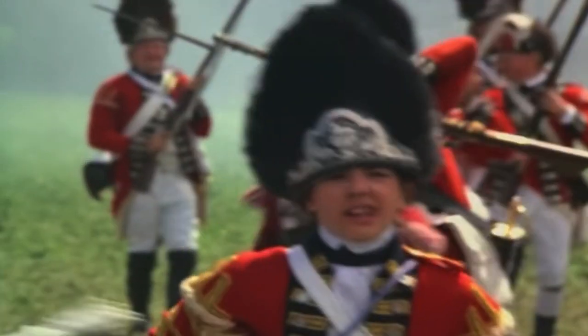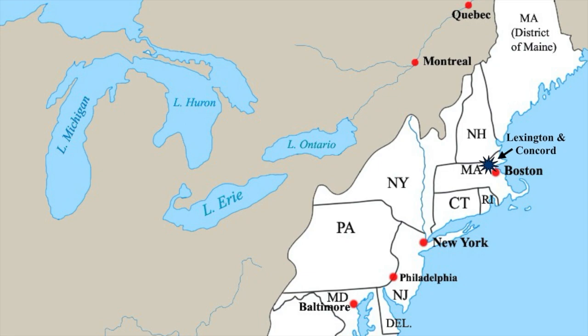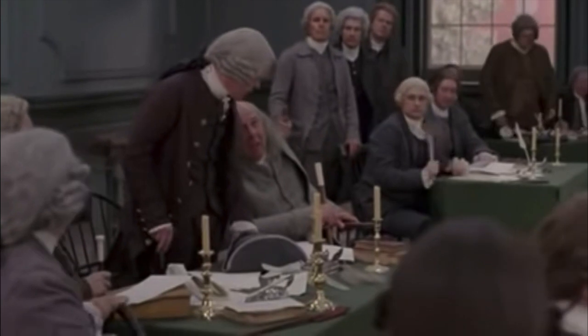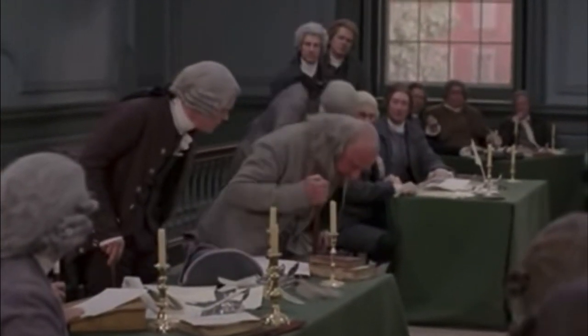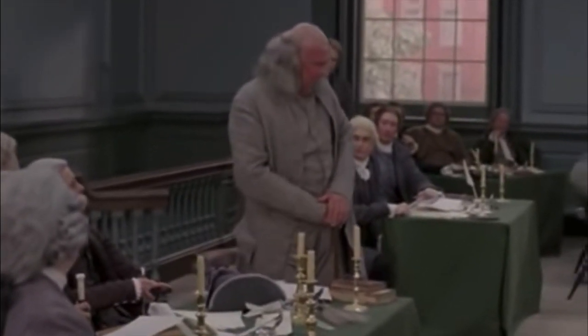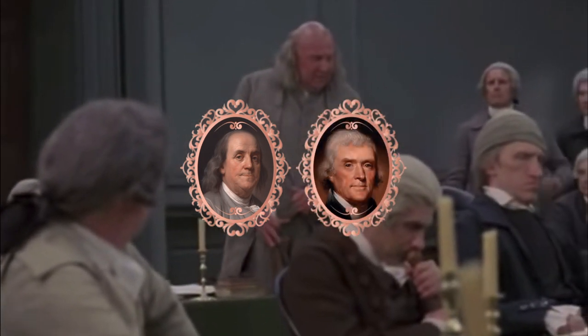However, one thing was certain: the American Revolution had truly begun. In the ensuing Battle of Lexington and Concord, the British were soundly beaten by overwhelming numbers of militia and subsequently forced to retreat back to Boston. Soon after, in May of 1775, the Second Continental Congress convened, with more delegates from all corners of the colonies, such as Benjamin Franklin and Thomas Jefferson, rallying to the cause.